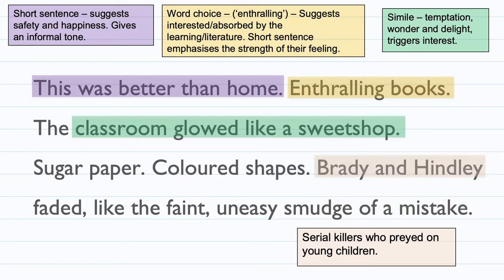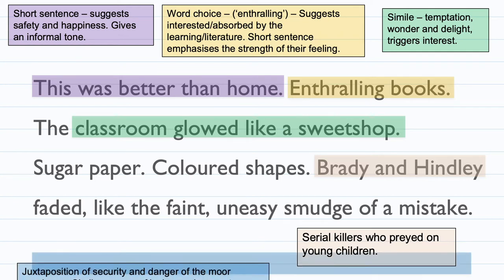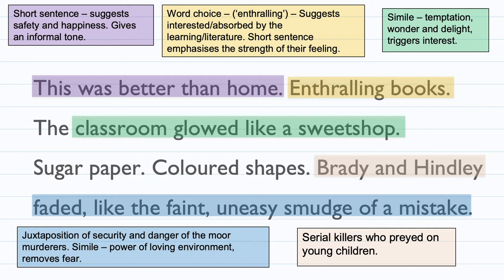Brady and Hindley are highlighted here for context — they are serial killers in England who preyed on young children. This brings a sense of darkness into the poem, contrasting against the glowing sweet shop and introducing danger from the outside world. However, these figures 'faded like the faint uneasy smudge of a mistake.' There's juxtaposition of the security and danger — the safe classroom is contrasted against Brady and Hindley. The power of a loving environment removes their fear and protects the children.